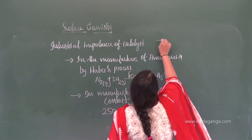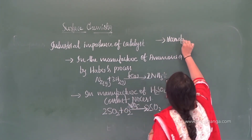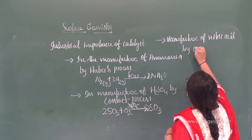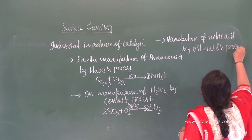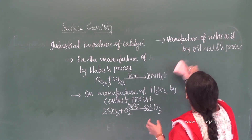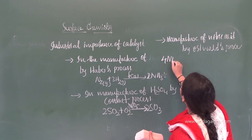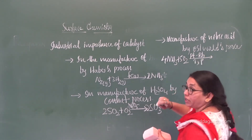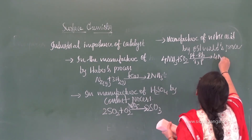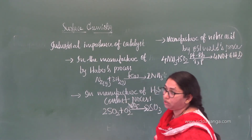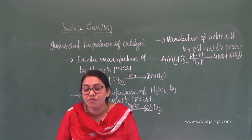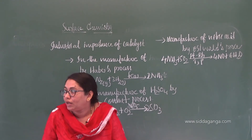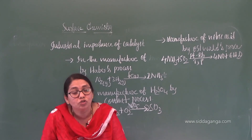The third example is the manufacture of nitric acid by the Ostwald process. The first step involves: 4NH₃ + 5O₂ → 4NO + 6H₂O, using platinum-rhodium as the catalyst at a specific temperature and pressure. These are the industrially important reactions where catalysts are used. Catalysts and enzymes are both very important, and the concept of catalysis overall is significant for exams.